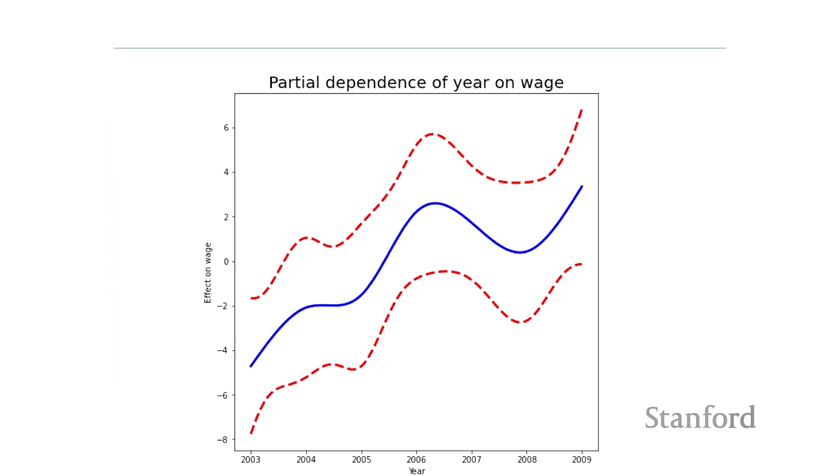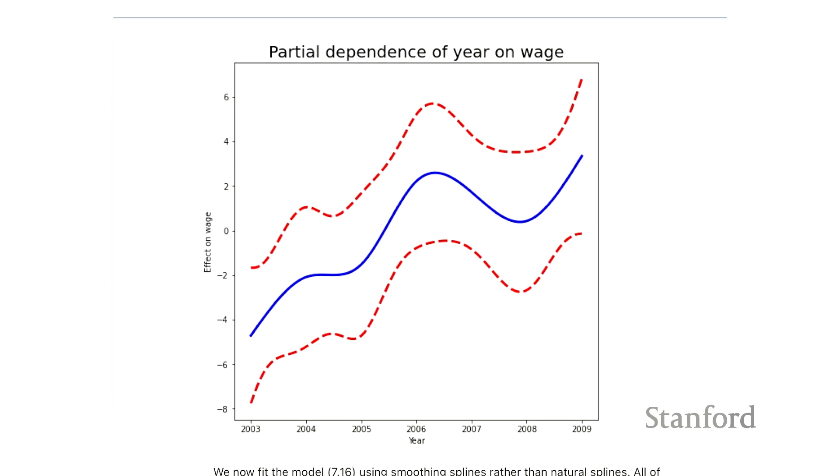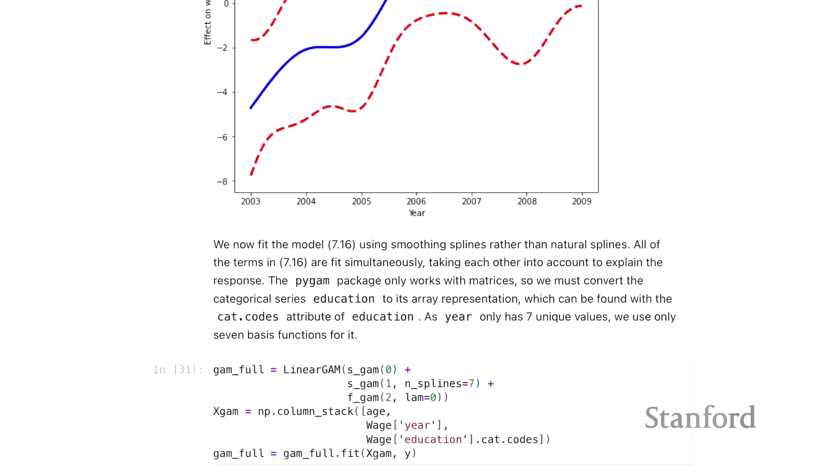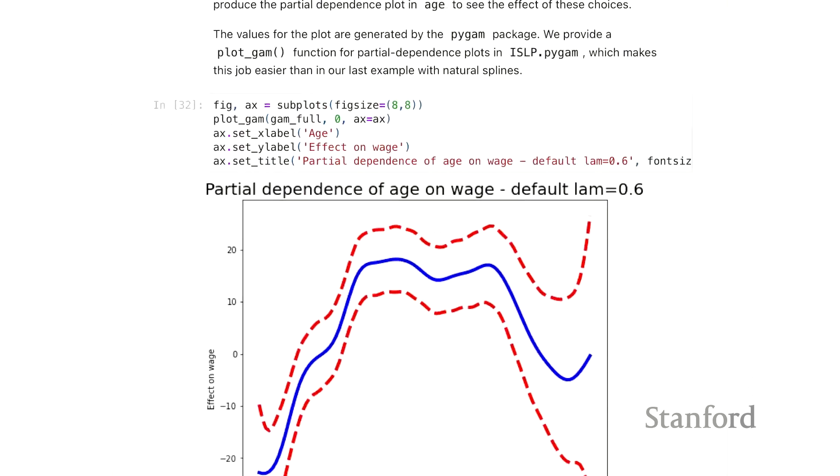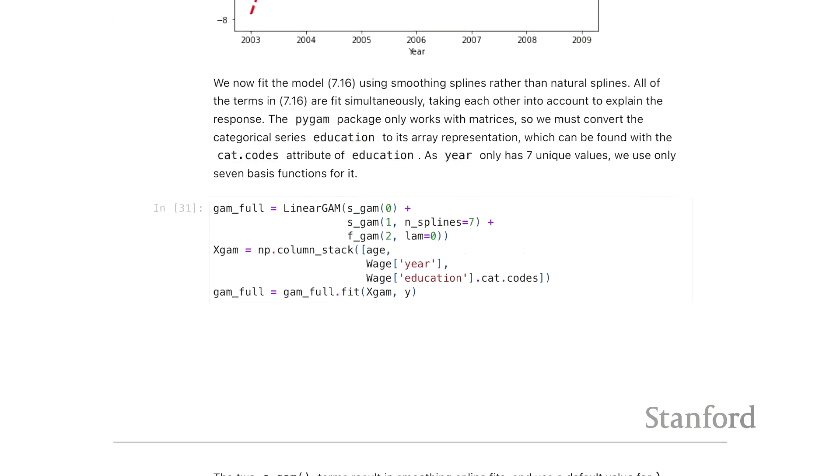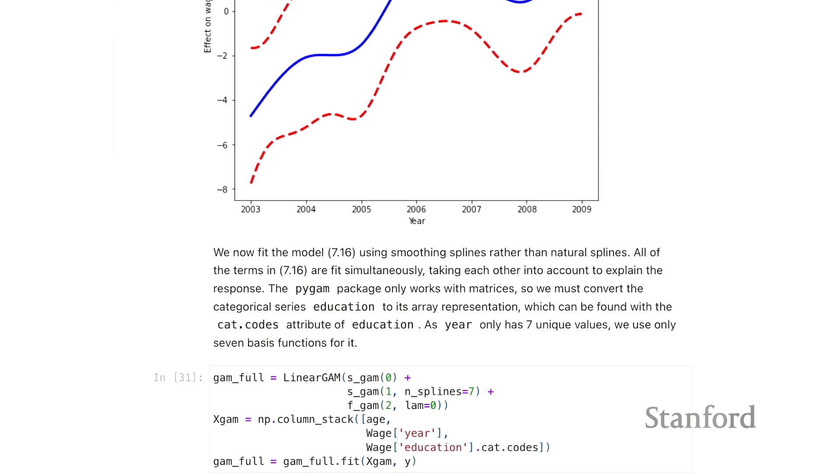So we also, as Trevor just mentioned, there will be a fitted function for year as a function, its effect on wage. And there will also be, we haven't plotted them, but there will be estimated coefficients for each education level.